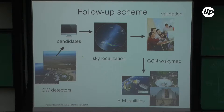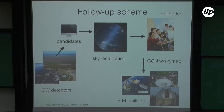The follow-up scheme for multi-messenger astronomy is as follows: the gravitational wave detector identifies a candidate automatically, signals are sent, sky localization is provided, it goes through a validation process where humans examine the candidate, and then it's issued as a circular through the Gamma-ray Coordinates Network (GCN). A sky map is provided and then astronomers follow up.